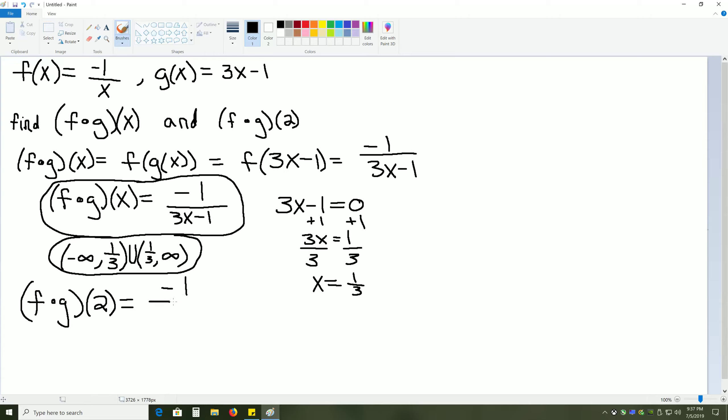So we have negative 1 over 3 times 2 instead of x minus 1, gives us negative 1 over 6 minus 1 is 5. So f of g of 2 is negative 1 fifth.